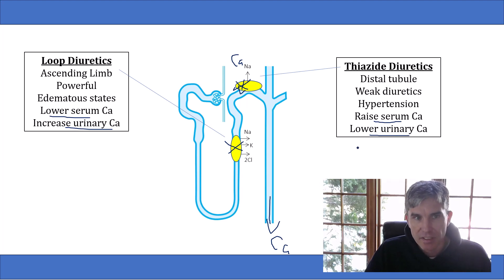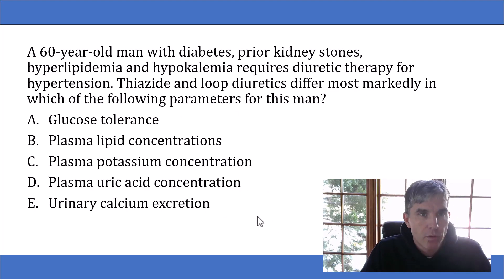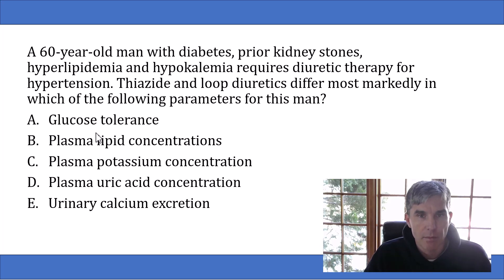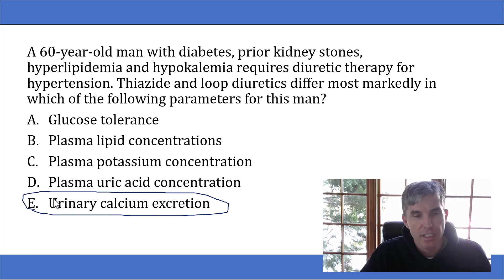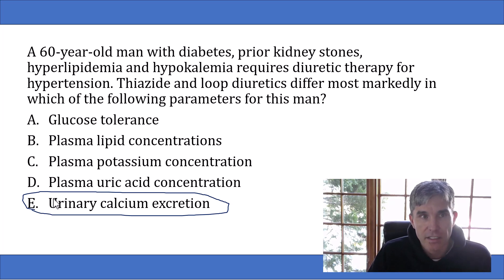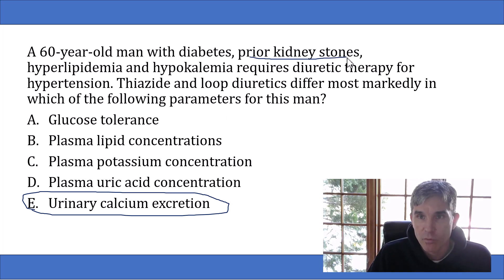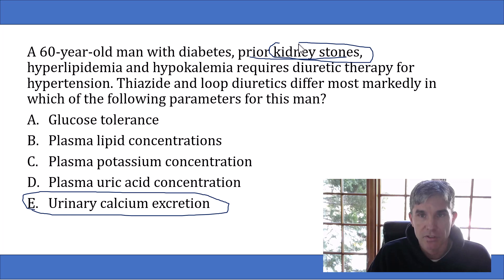So the two biggest differences between loop diuretics and thiazides are the powerfulness of the diuretic response and the opposite calcium effects. Going back to the question, we look for an answer choice involving calcium or the amount of diuresis — and here we have answer choice E, urinary calcium excretion. This is definitely the biggest difference listed between thiazides and loop diuretics. Also, a thiazide diuretic would be very helpful for this patient because he has prior kidney stones. Since thiazides cause less calcium to go into the urine, and calcium is a part of most kidney stones, this is a good thing for people who frequently produce kidney stones.